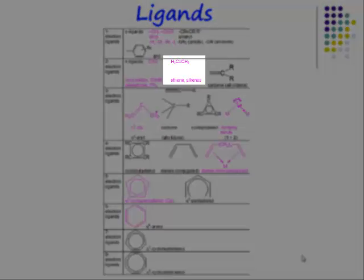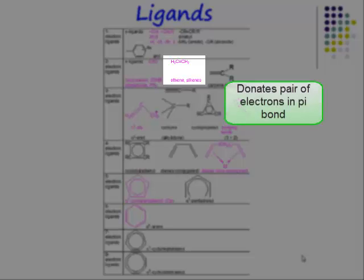Also, if you have an alkene ligand, an alkene ligand binds face-on, donating the pair of electrons in the pi bond. So an alkene ligand is a two electron donor.